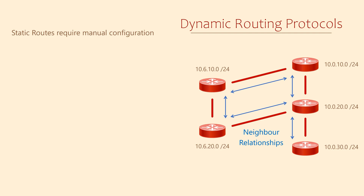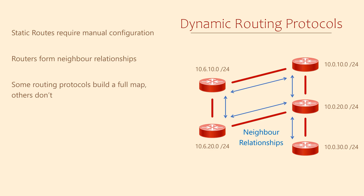The router does this by sending out hello messages on its interfaces. When it gets a hello in response it knows there's another router there. These routers then form a neighbour relationship and use this relationship to share information about the subnets they know and how to get there. Some routing protocols will use this information to build a full map of the network; others only concern themselves with direct neighbours — this is more like following road signs to get to a destination.